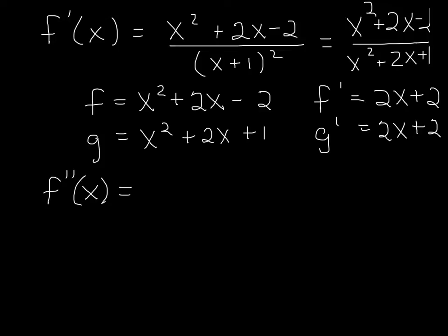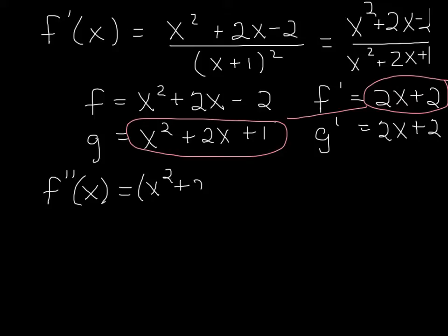Okay, so our second derivative will be the derivative of the derivative, starting again with our second function times the derivative of the first function. That's x squared plus 2x plus 1 times 2x plus 2, minus,